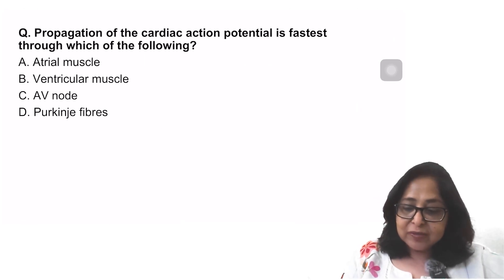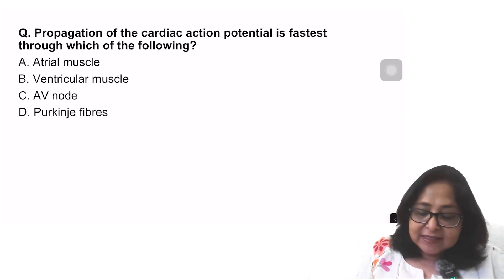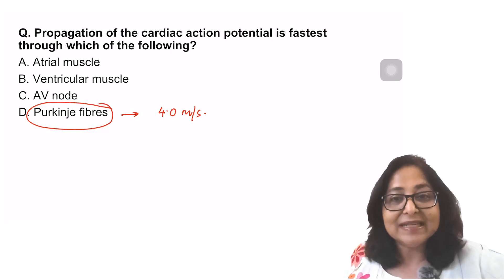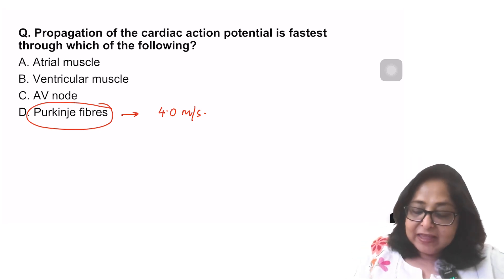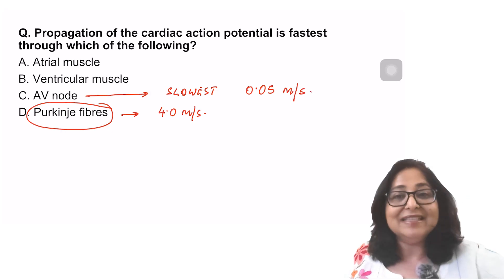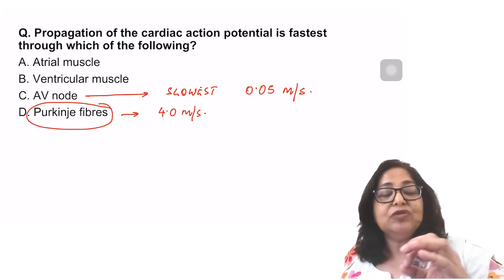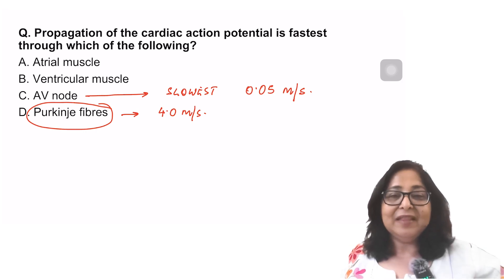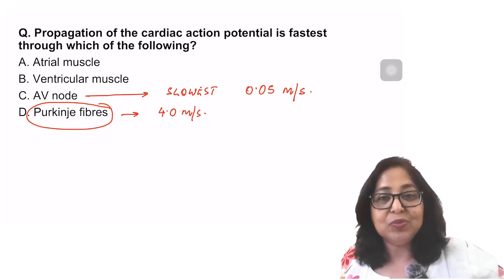Propagation of the cardiac action potential will be fastest through which of the following? The fastest conducting fibers of the heart are the Purkinje fibers. Purkinje fibers will conduct the action potential at a speed of 4 meters per second. The AV node is the slowest conducting and conducts the cardiac impulse at a speed of 0.05 meters per second. The slow conduction through the AV node is responsible for the nodal delay. The duration of the nodal delay is 92 milliseconds or 0.092 seconds.